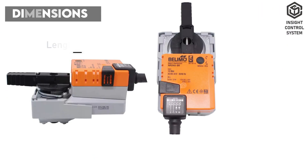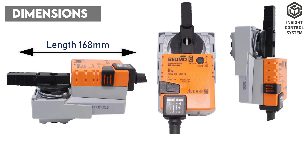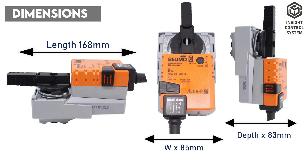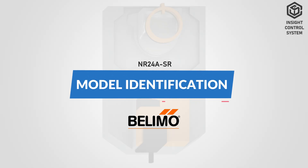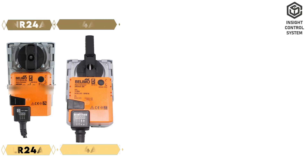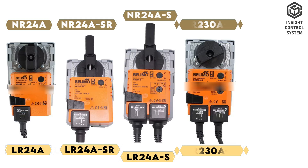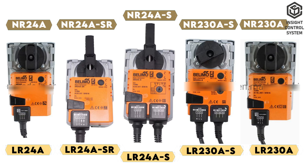Dimensions: length 168 mm, width 85 mm, depth 83 mm. This Belimo rotary valve actuator is available in many different models of LR and R-Series.